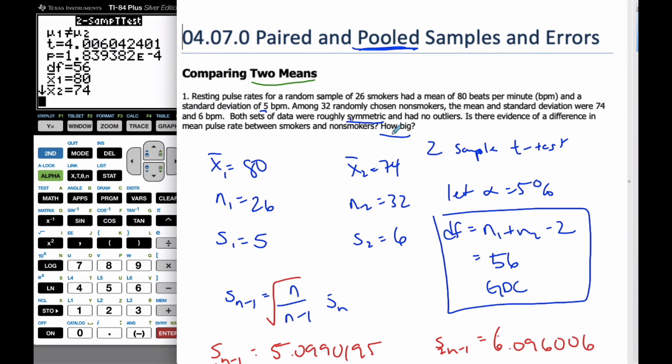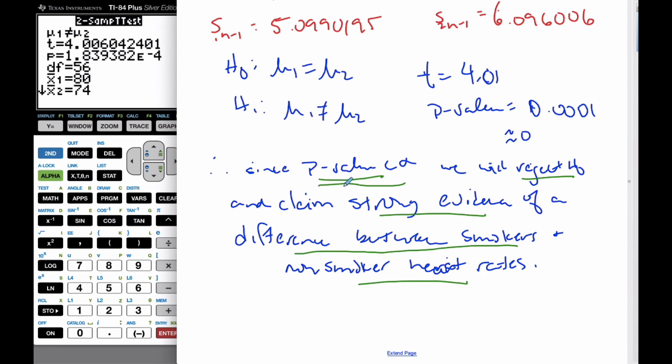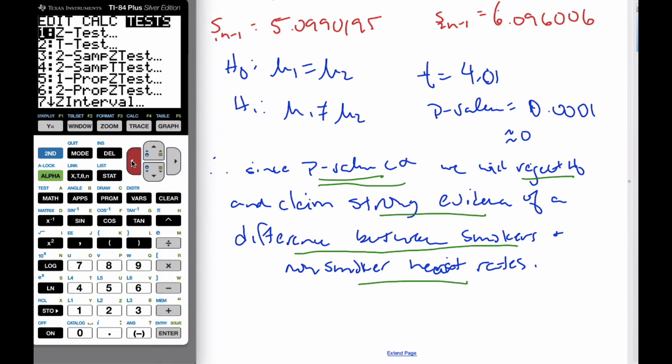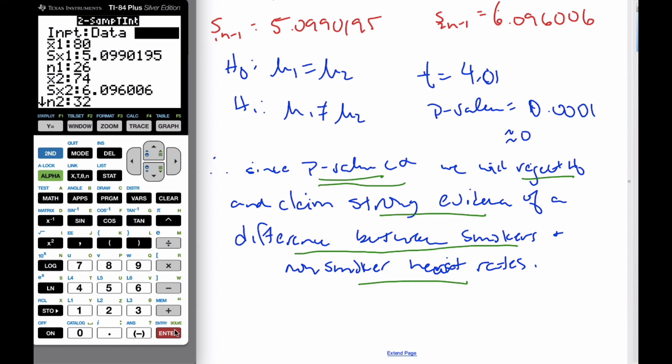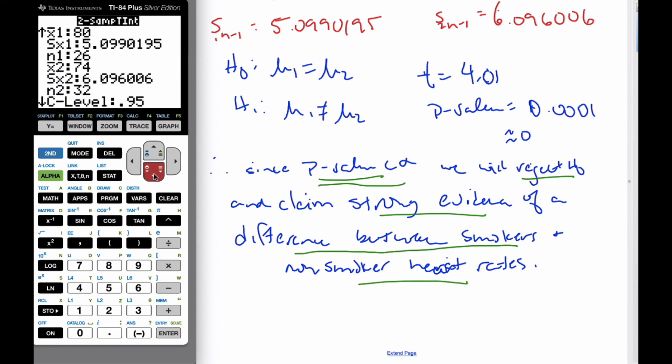Then finally, which always kind of makes sense, is how big is the difference? Well, if I don't know how big the difference is, that is going to be our confidence interval. So if I go to here, and if I look at 0, it's a two-sample T interval. It transfers it over, and I'll do a 95% interval, and it's pooled, and I'm going to calculate it.